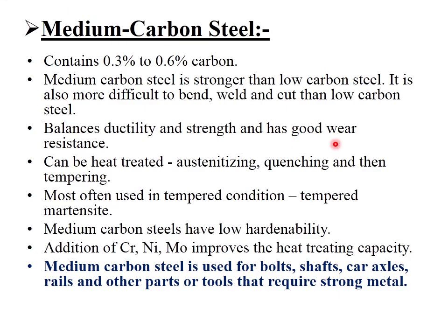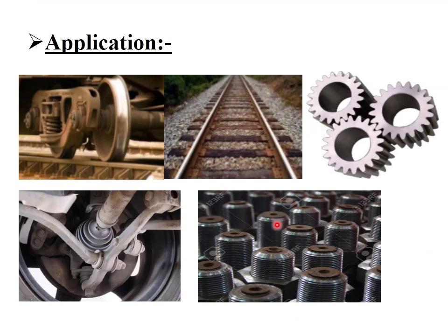Medium carbon steel has very good wear resistance. Applications include railway tracks, wagon wheels, nuts and bolt assemblies, and gear assemblies. In gear boxes there are relative rotary and sliding motions at high speed, and because of its good wear resistance, medium carbon steel is a very popular candidate for these applications.